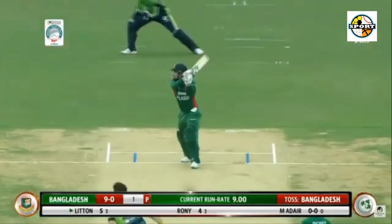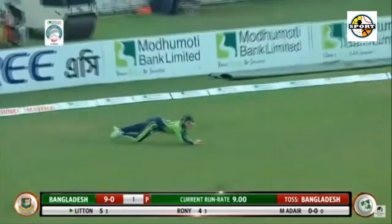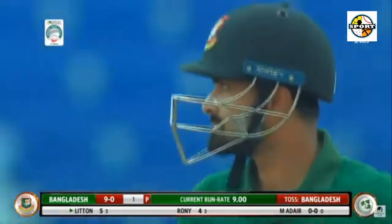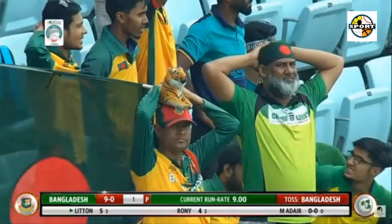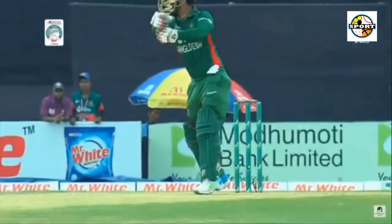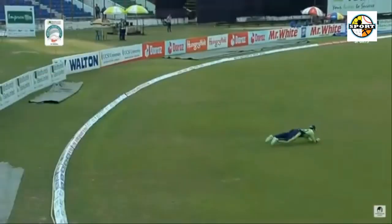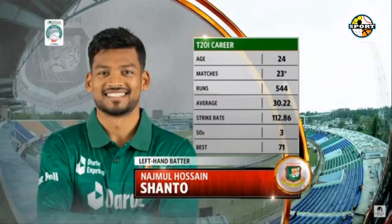1.1: Shakib to Sterling, 4 — length ball on middle, Sterling backs away, makes room and slaps it in the air through point; there's a diving effort from the fielder but he can't get to it. 1.2: Shakib to Sterling, 4 — floated up just outside off, Sterling shuffles across, gets low and sweeps powerfully behind square. Shakib's first two balls have disappeared to the boundary.